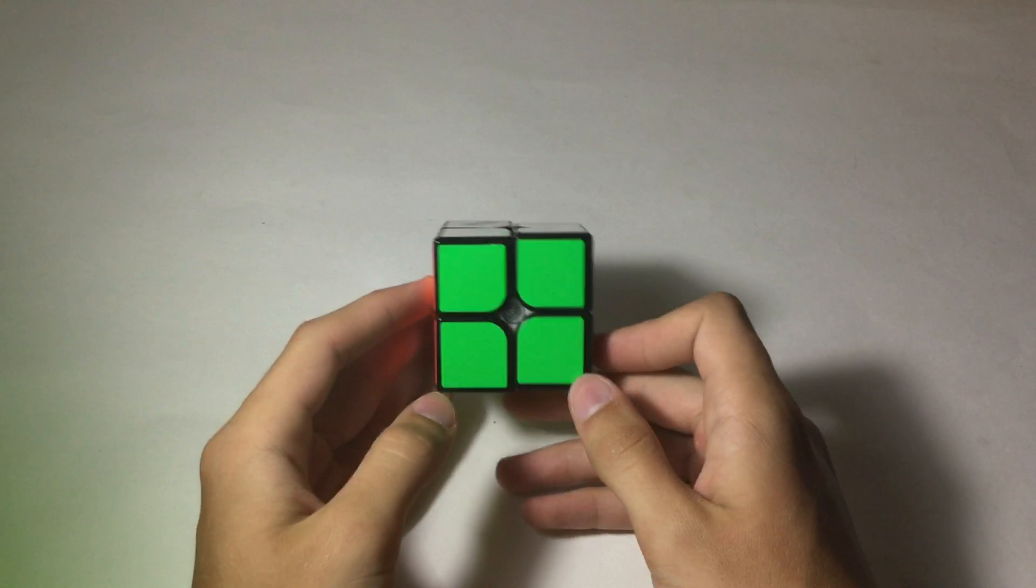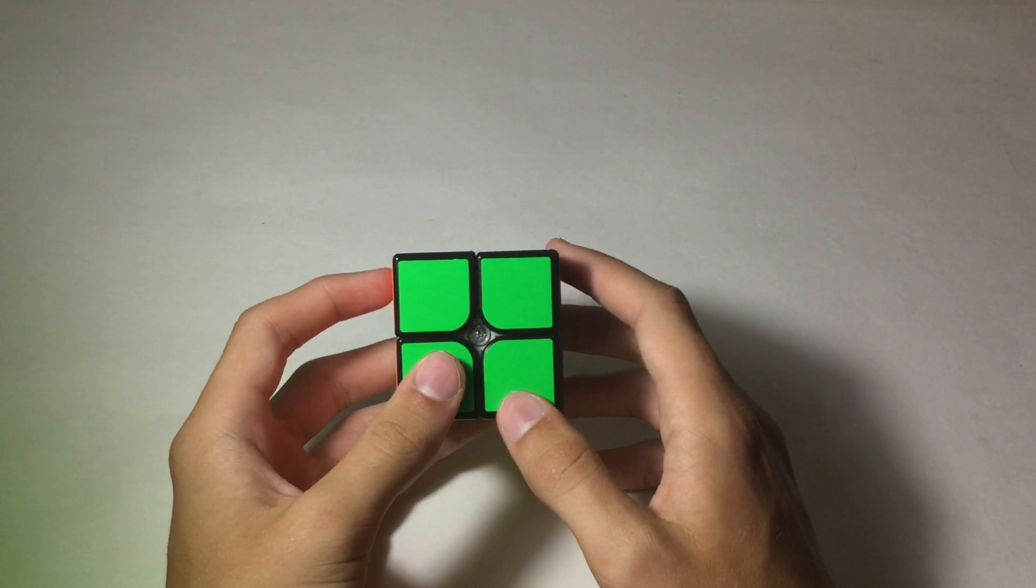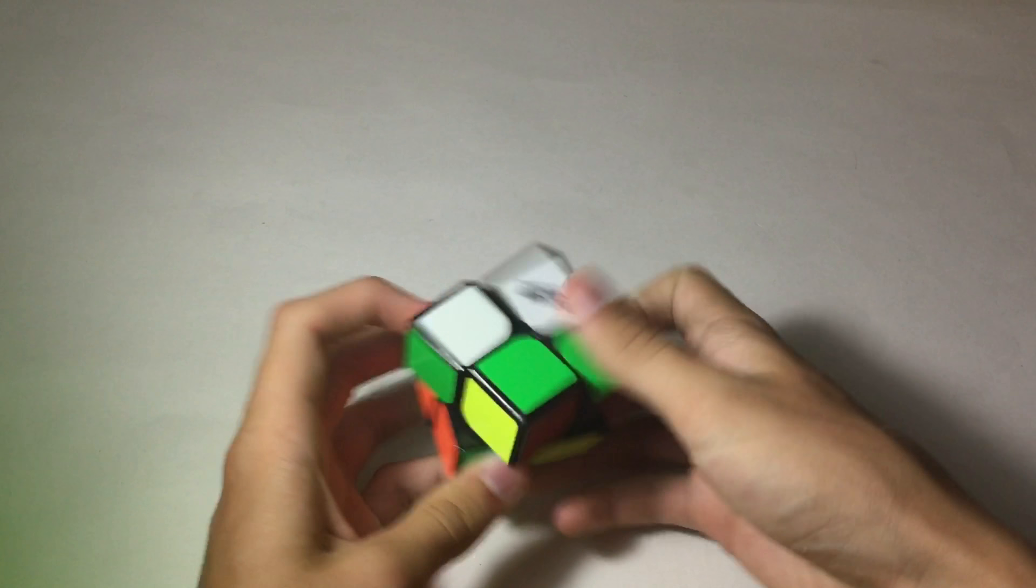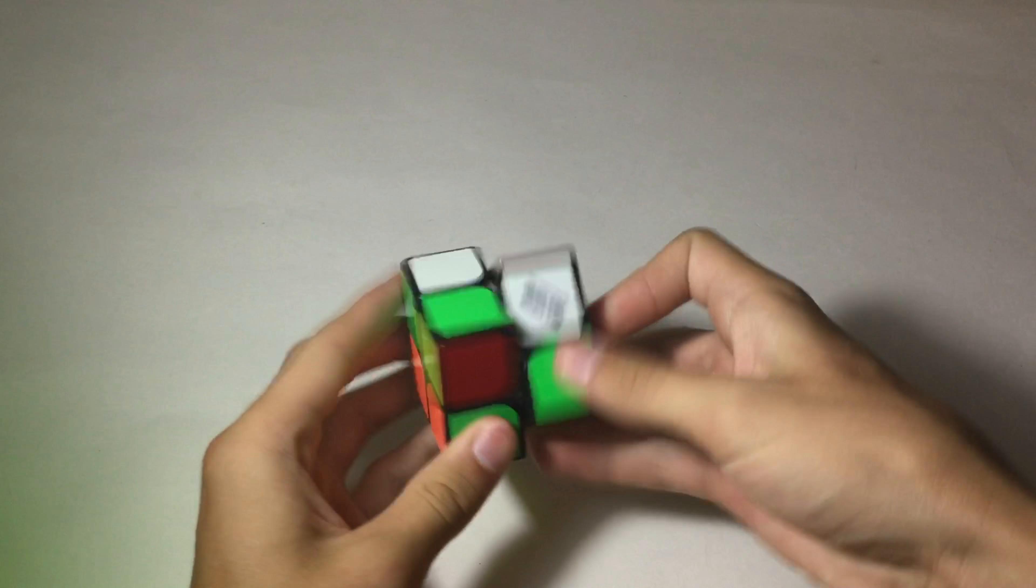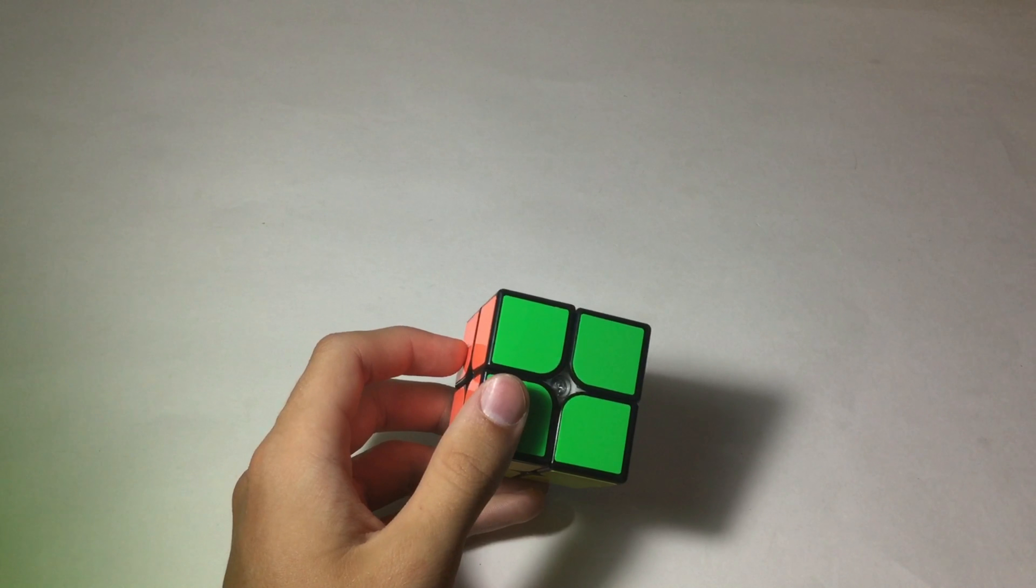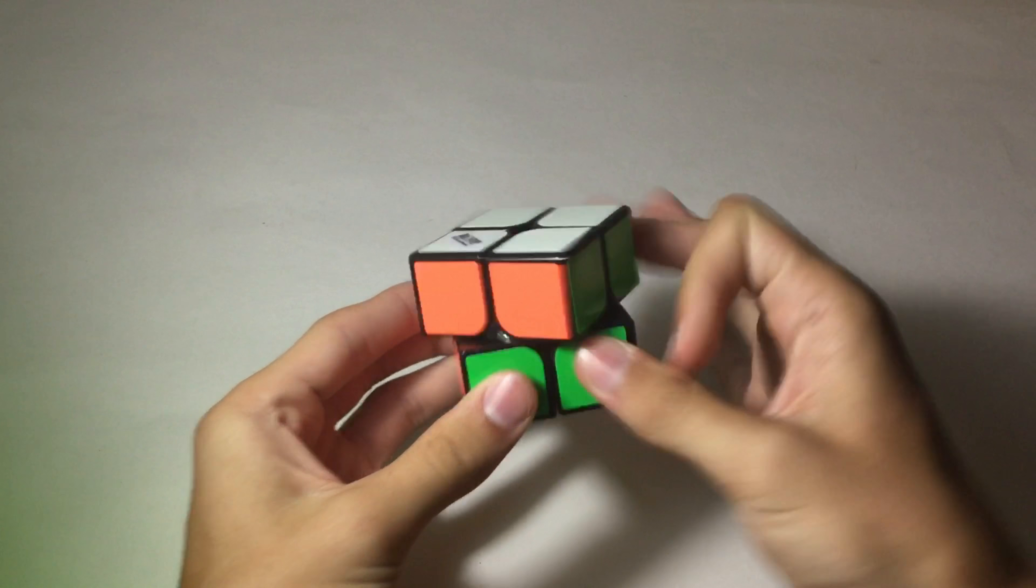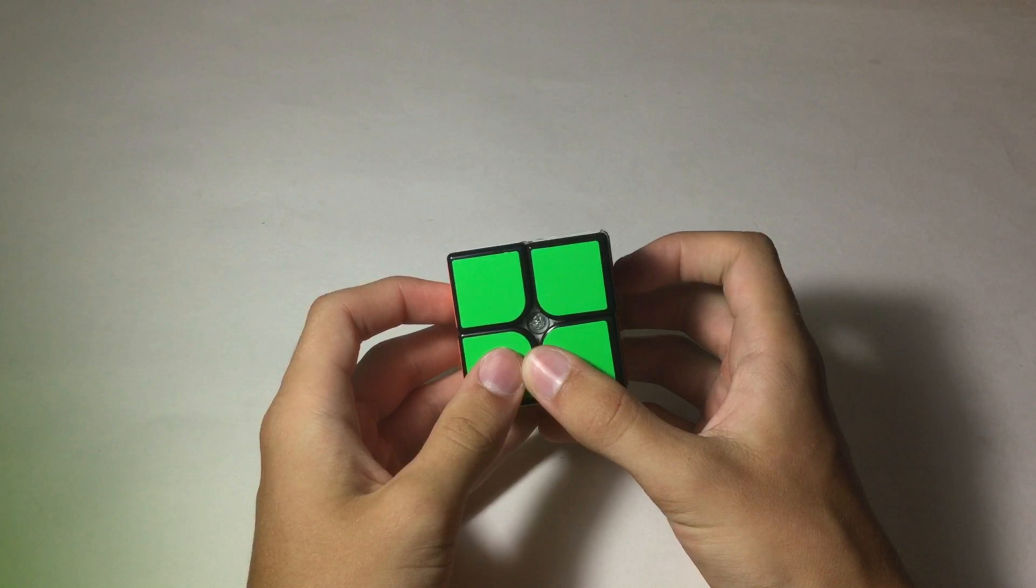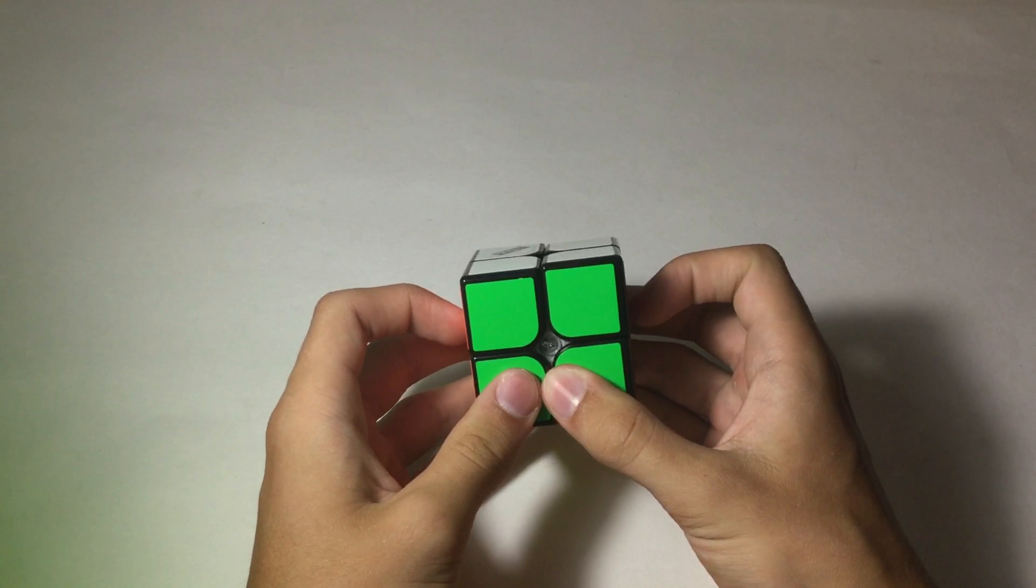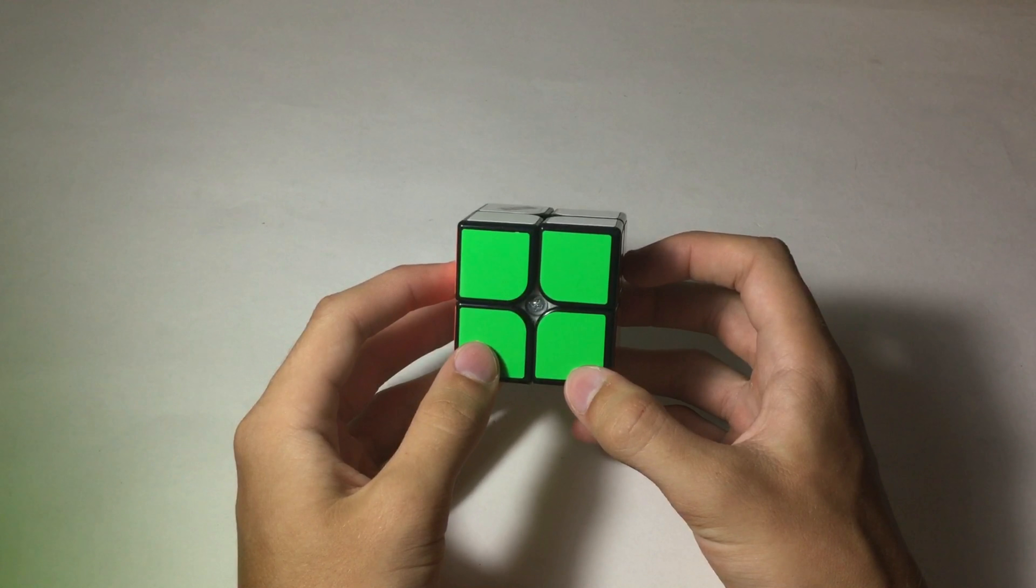That is just how I solve the two by two using the Ortega method. If you guys have any questions or concerns please put them in the comments down below. Please follow my Instagram at Rubik's Cuber 88 underscore official and that's it for me. I will see you guys in next week's video. Hope that I've taught you guys some Ortega tips. Thanks for watching and I'll see you in the next video.